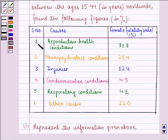So the first cause is reproductive health conditions and female fertility rate is 31.8%. Neuropsychiatric conditions 25.4%.